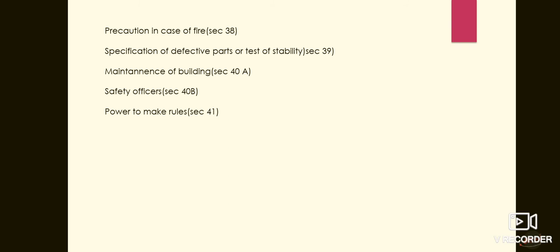Next is maintenance of buildings, mentioned in session 40a. Similarly, if the inspector finds that the condition of a building is not satisfactory or is detrimental to the health of workers, he may serve on the occupier or manager an order in writing specifying the measures to be taken and also calls for a compliance report within a specified date.